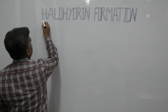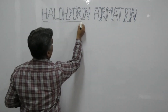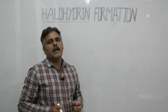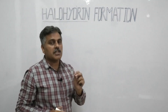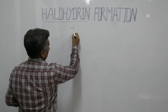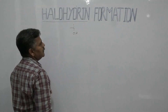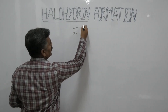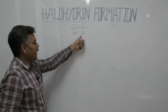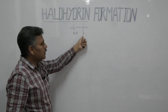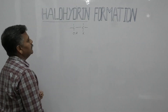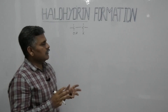So let's start with halohydrin formation. A halohydrin, as the name indicates, is actually an alcohol which possesses a halogen at an adjacent carbon. Suppose we have a carbon with a hydroxyl group — that is an alcohol — and at the adjacent carbon we have a halogen, which may be bromine, chlorine, or iodine. This compound is a halohydrin.